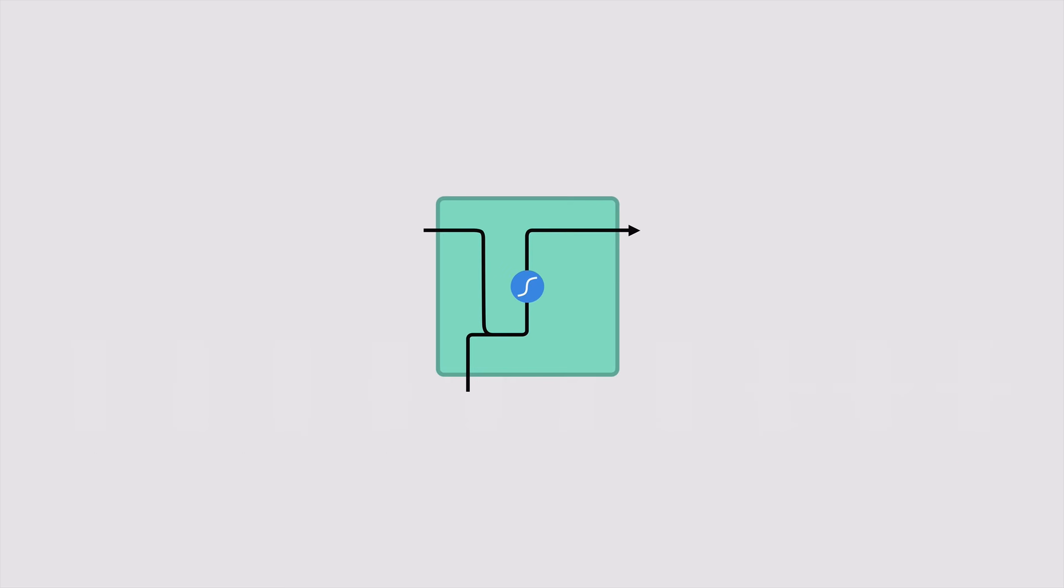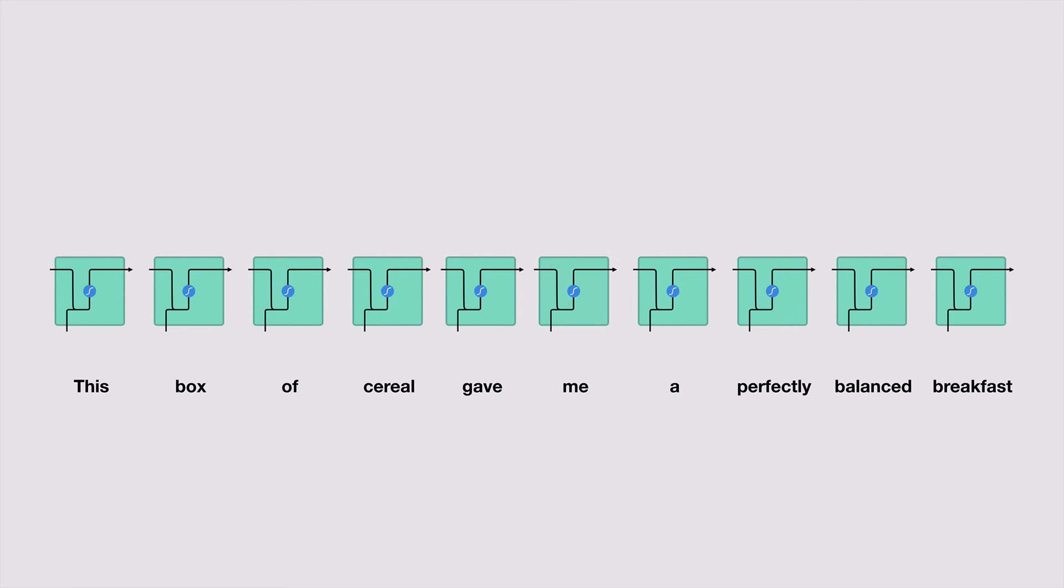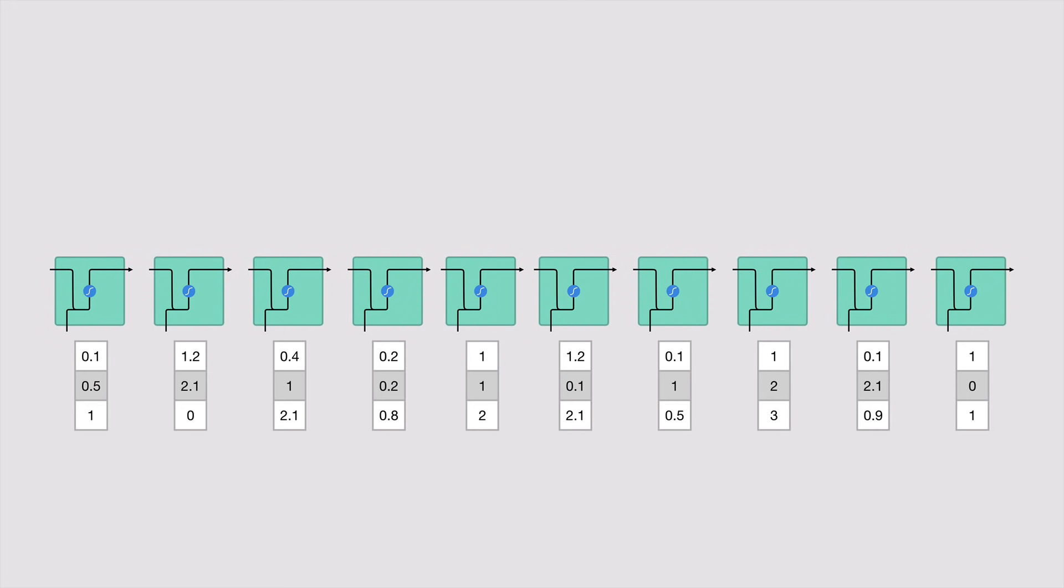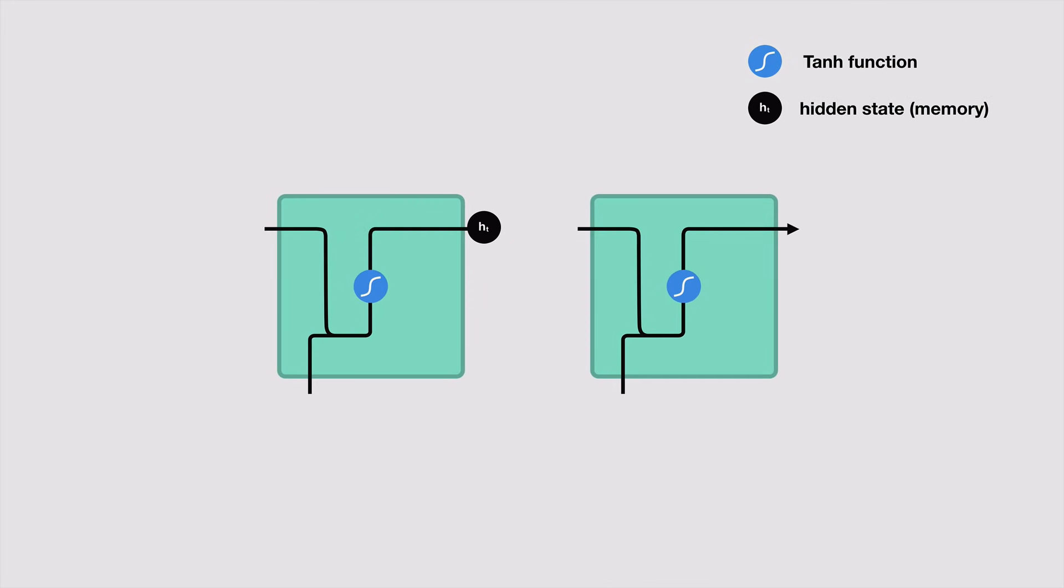To understand how LSTMs or GRUs achieves this, let's review the recurrent neural network. An RNN works like this. First, words get transformed to machine-readable vectors. Then the RNN processes the sequence of vectors one by one. While processing, it passes the previous hidden state to the next step of the sequence. The hidden state acts as the neural network's memory. It holds information on previous data that the network has seen before.